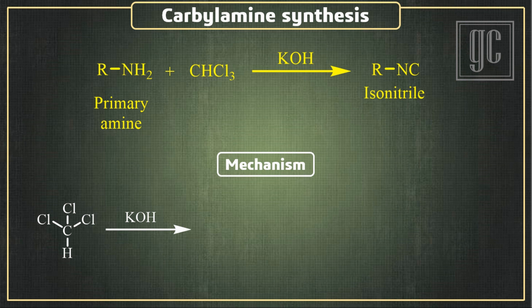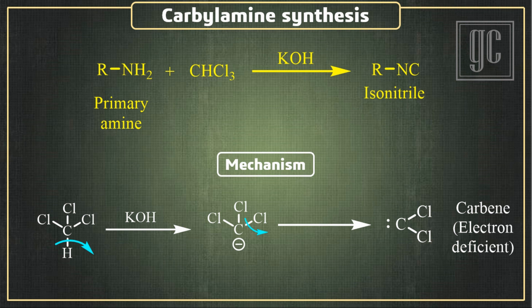One acidic hydrogen is removed from chloroform and a carbanion is formed. In this intermediate, one chlorine atom leaves the molecule with all bonding electrons, and as a result carbene is formed. The prepared carbene is electron deficient in nature.